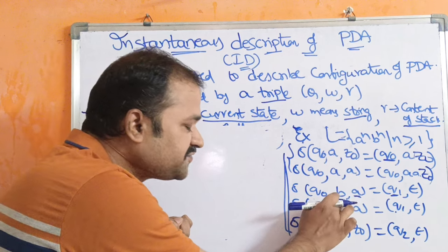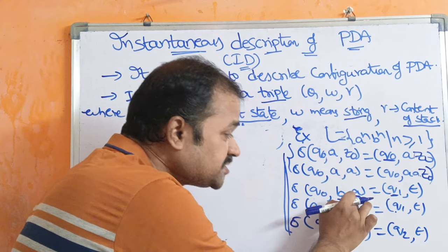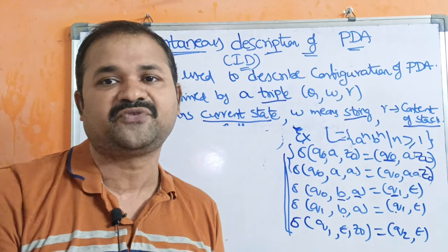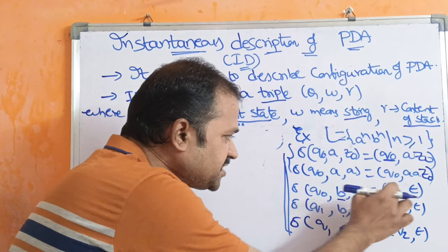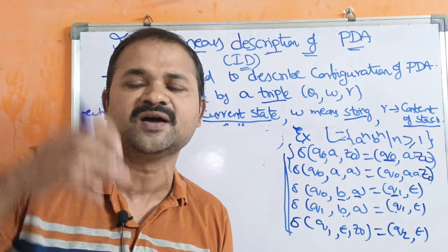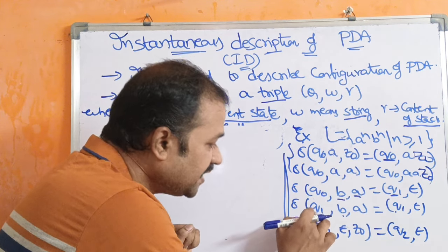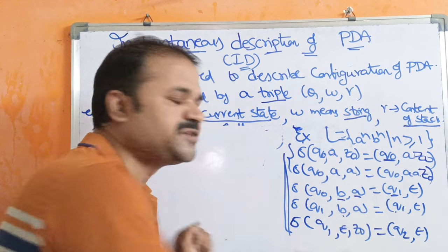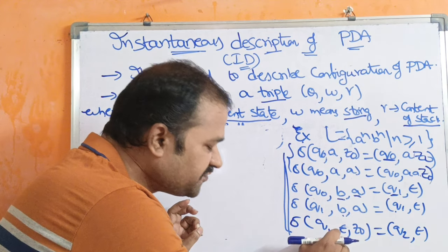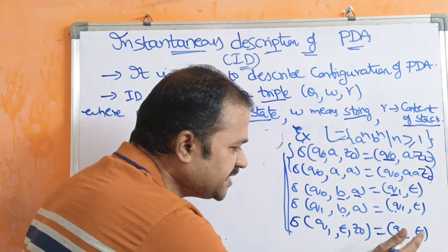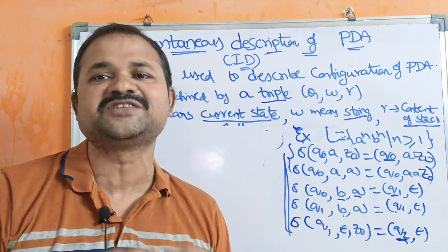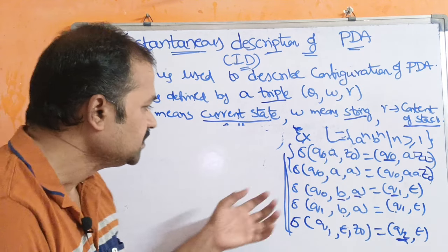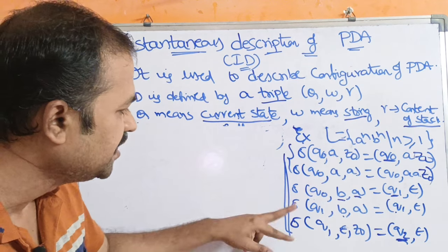If the current state is Q0, input symbol is B, and the stack's top symbol is A, then we perform a pop operation and change the state from Q0 to Q1 for the first B read. The epsilon denotes we are performing a pop operation. Next, if the current state is Q1, input symbol is B, and the stack's top symbol is A, then we stay at Q1 and again epsilon denotes a pop operation. If the current state is Q1, input symbol is epsilon, and the stack is empty, then we change from Q1 to Q2 — the final state — and epsilon specifies the stack is now empty. The first two transition functions are push operations and the next three are pop operations.